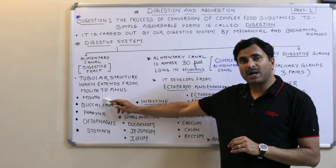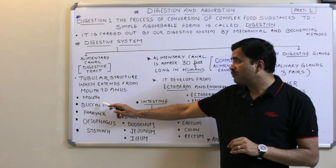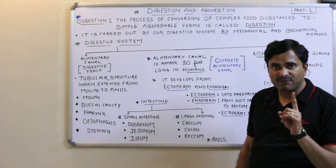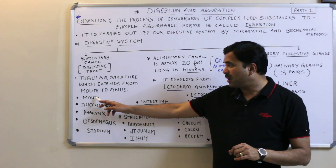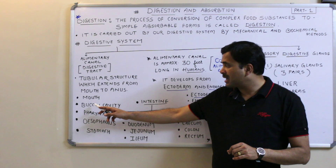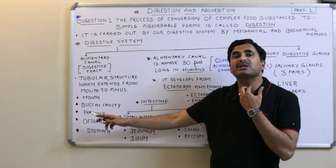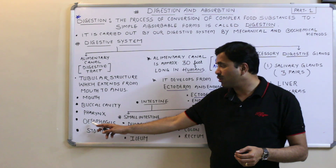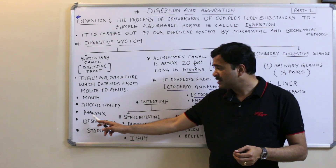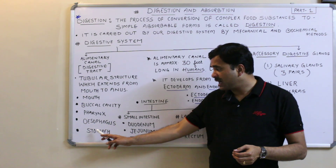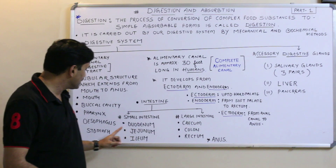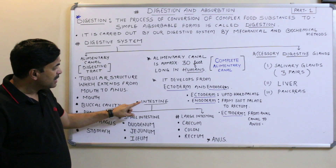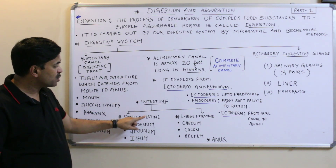The alimentary canal consists of the following parts: the mouth opens into the buccal cavity, also called the oral cavity. The buccal cavity opens into the pharynx, found in the throat region. The pharynx opens into a tubular structure known as the esophagus, and the esophagus opens into a sac-like structure called the stomach. The stomach opens into the intestine.